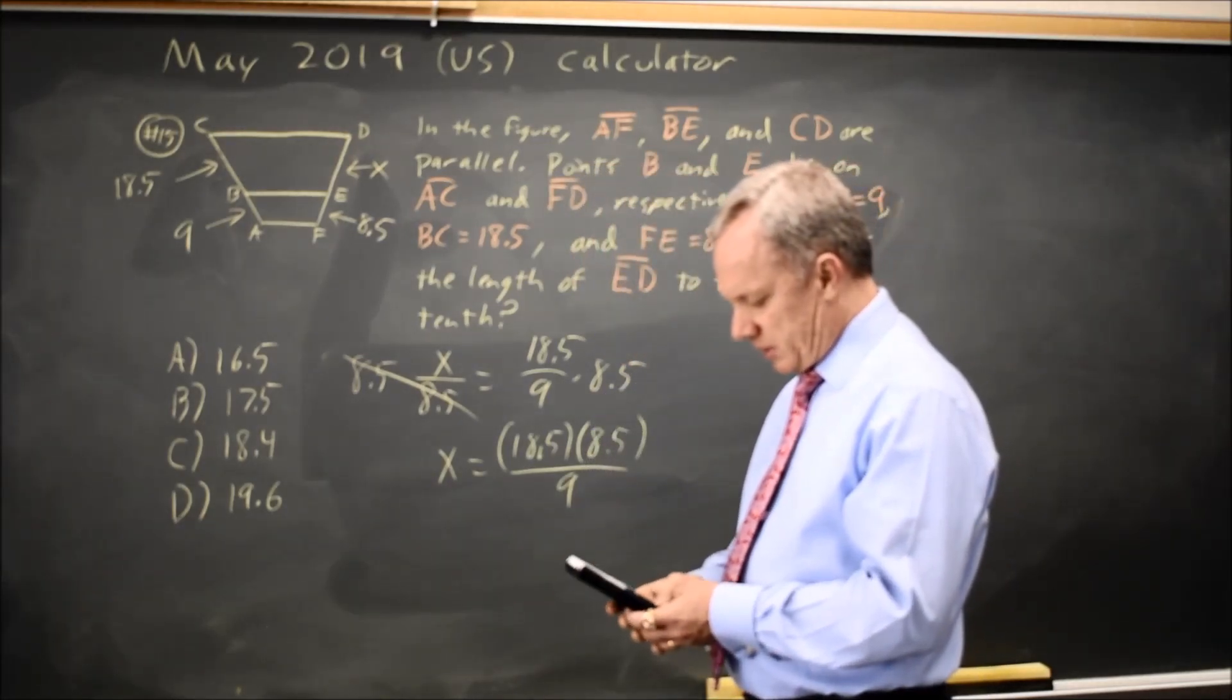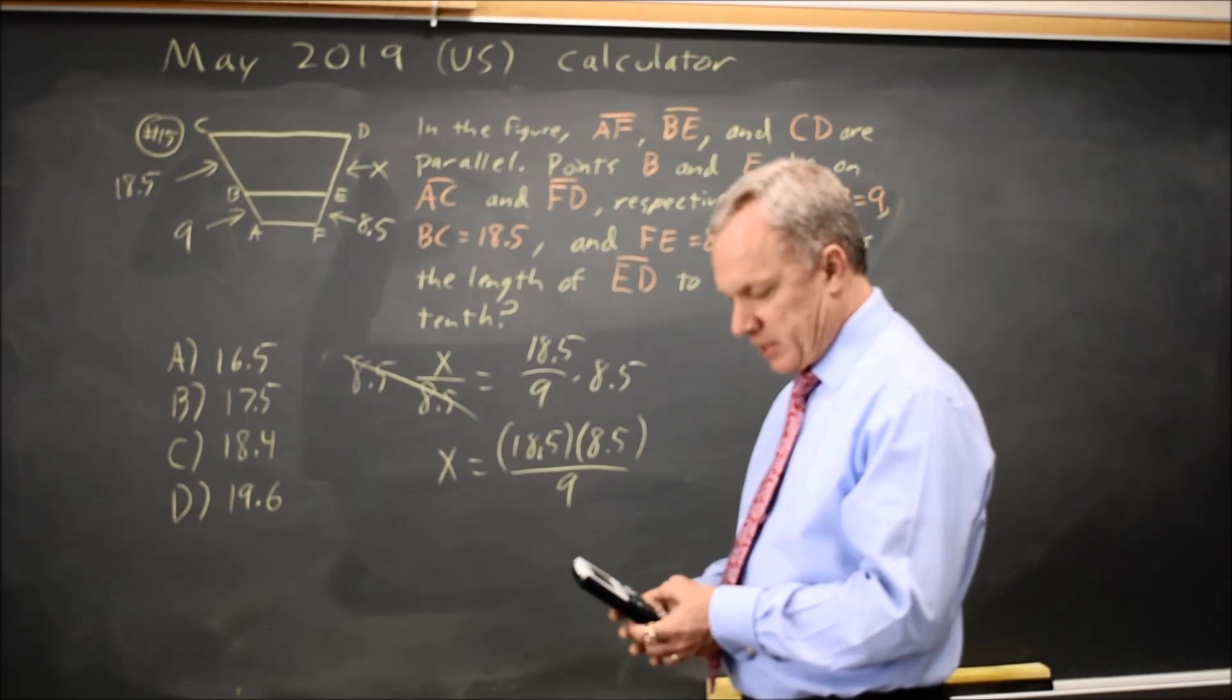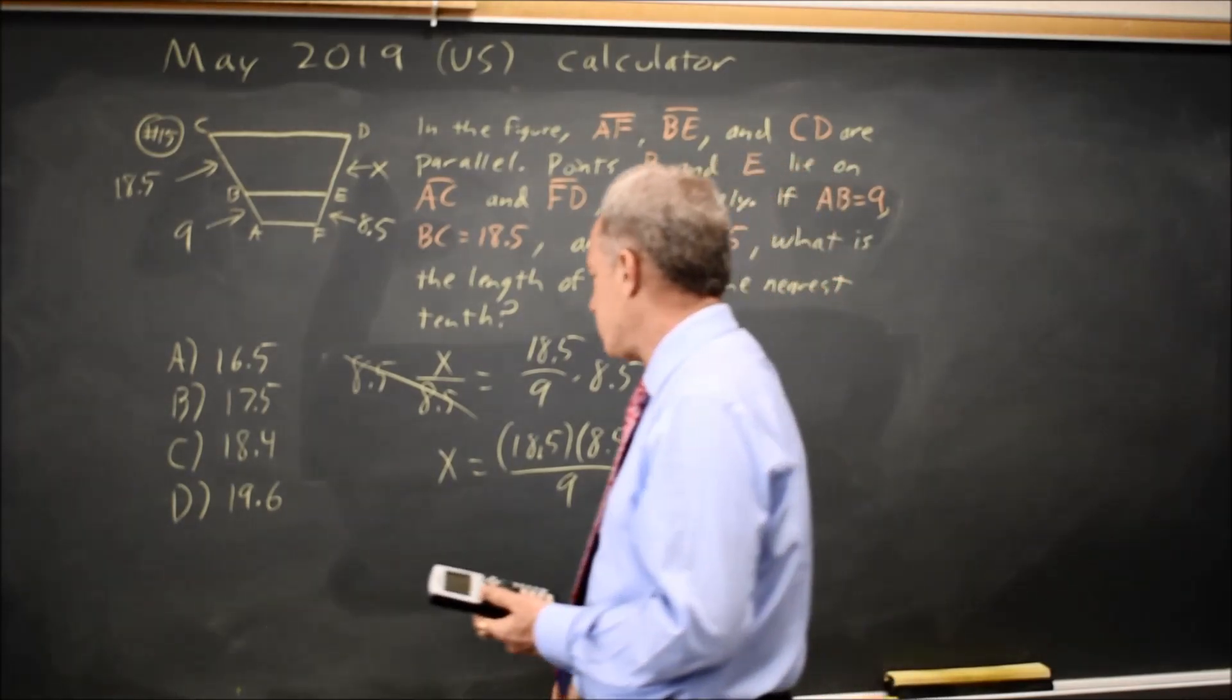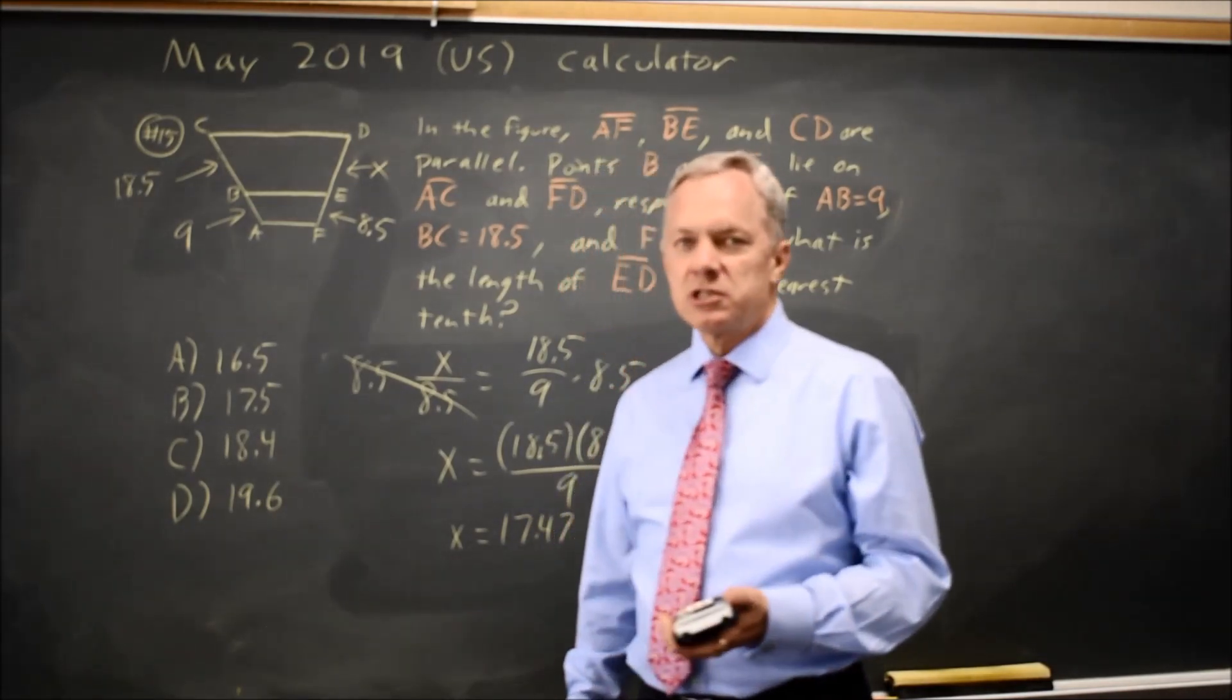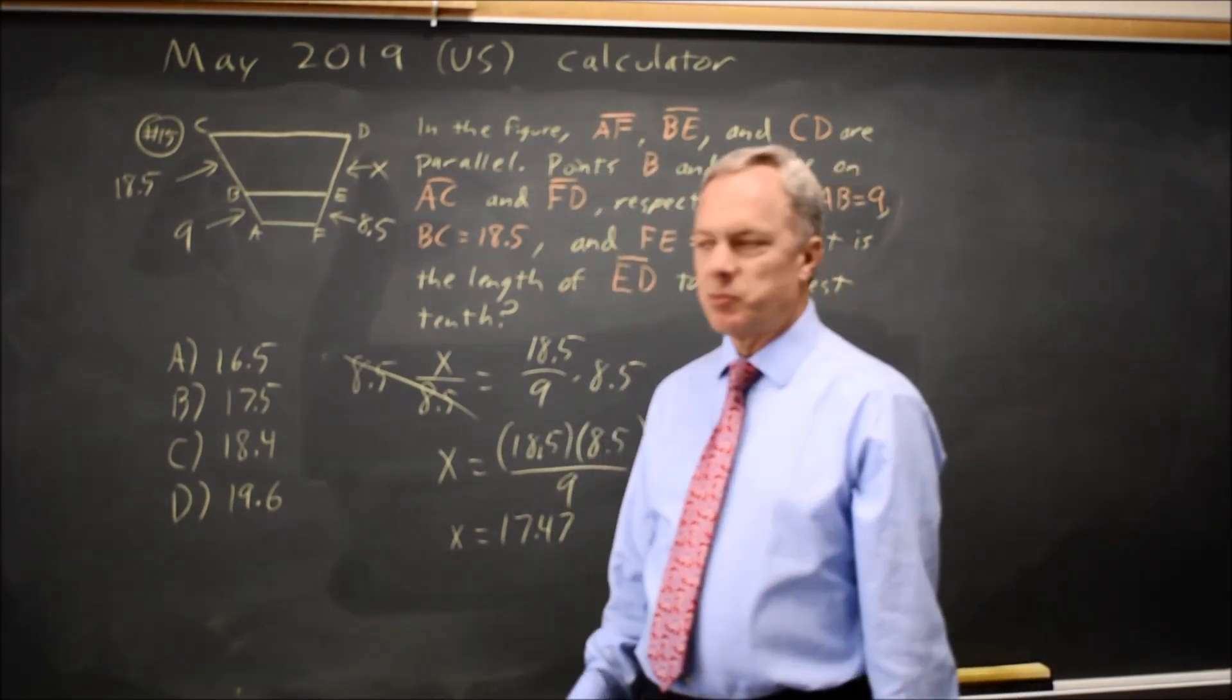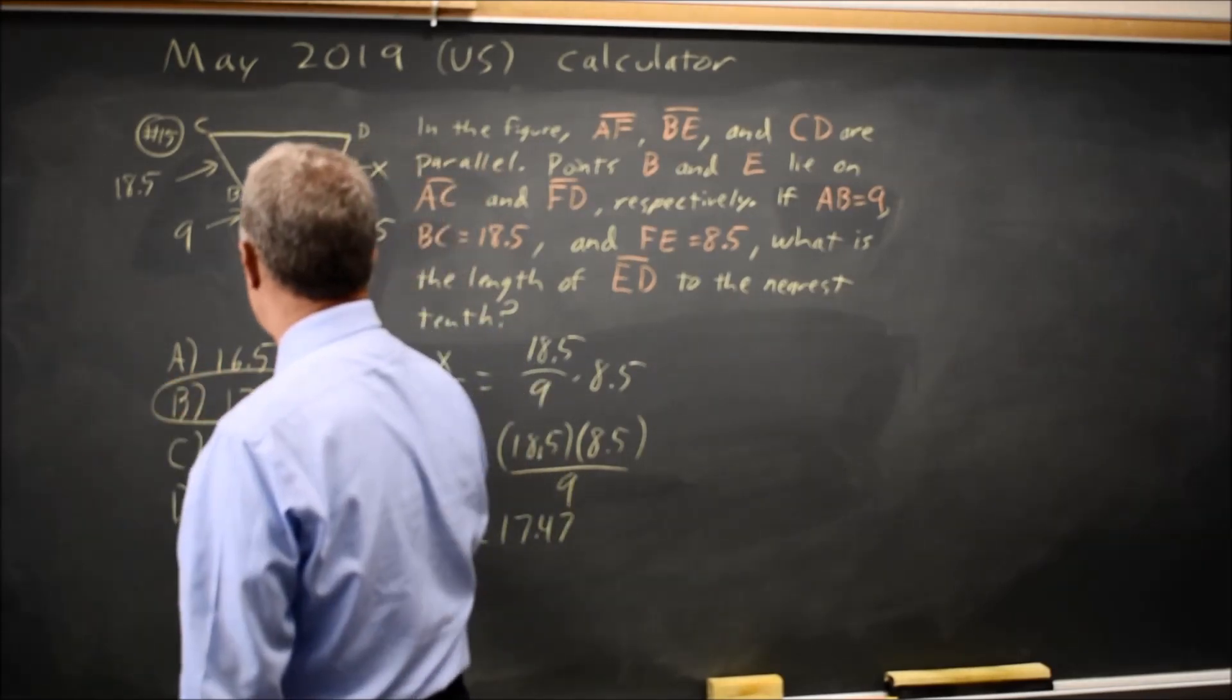8.5 times 18.5 over 9 is 17.47, and the question was to the nearest tenth, so that would be choice B, 17.5.